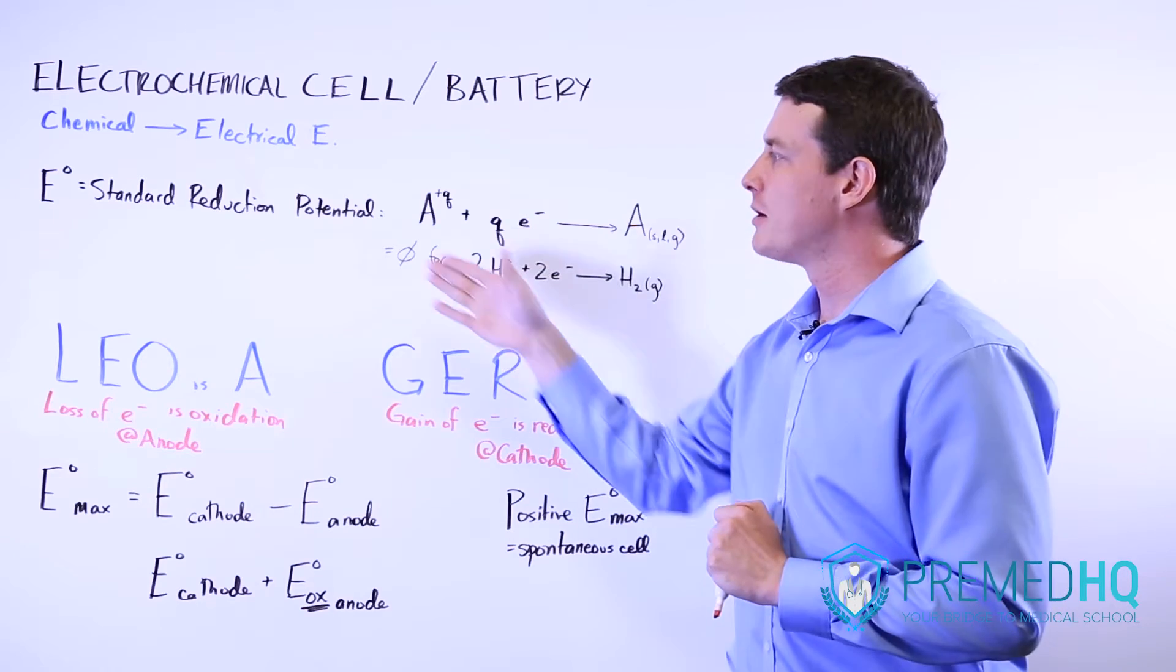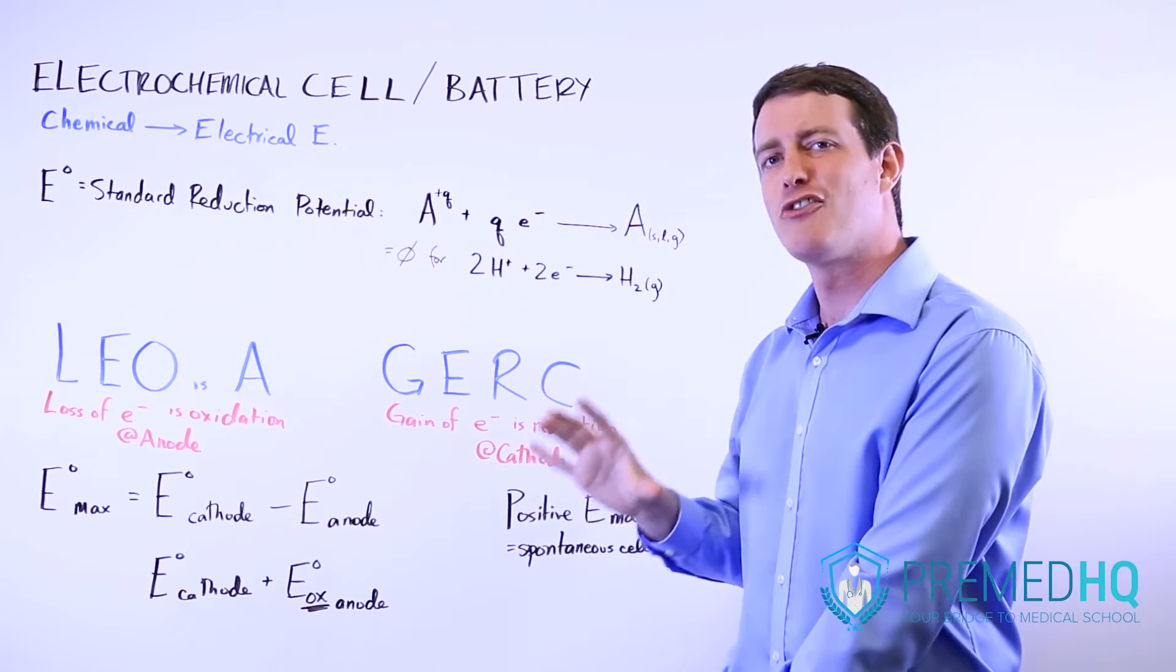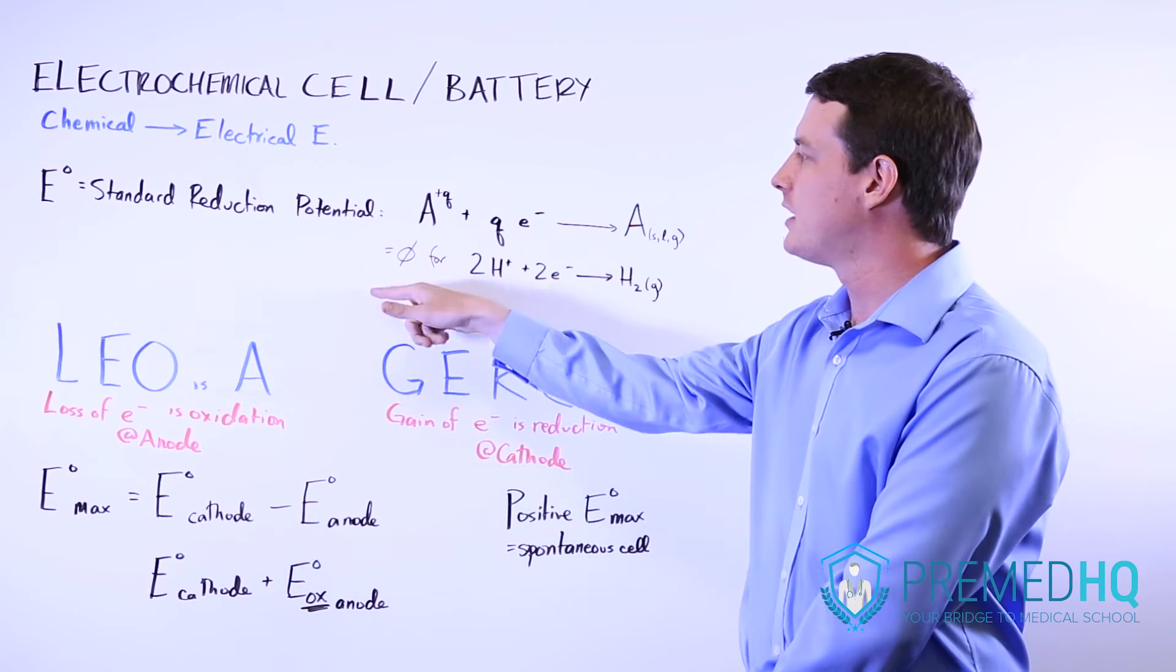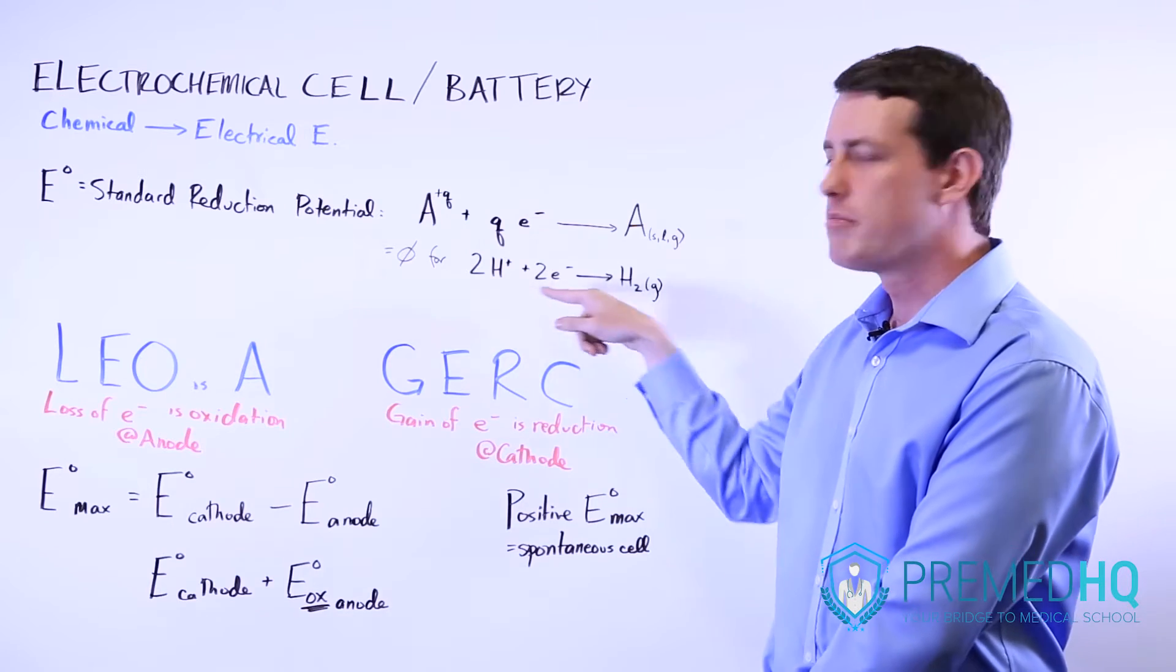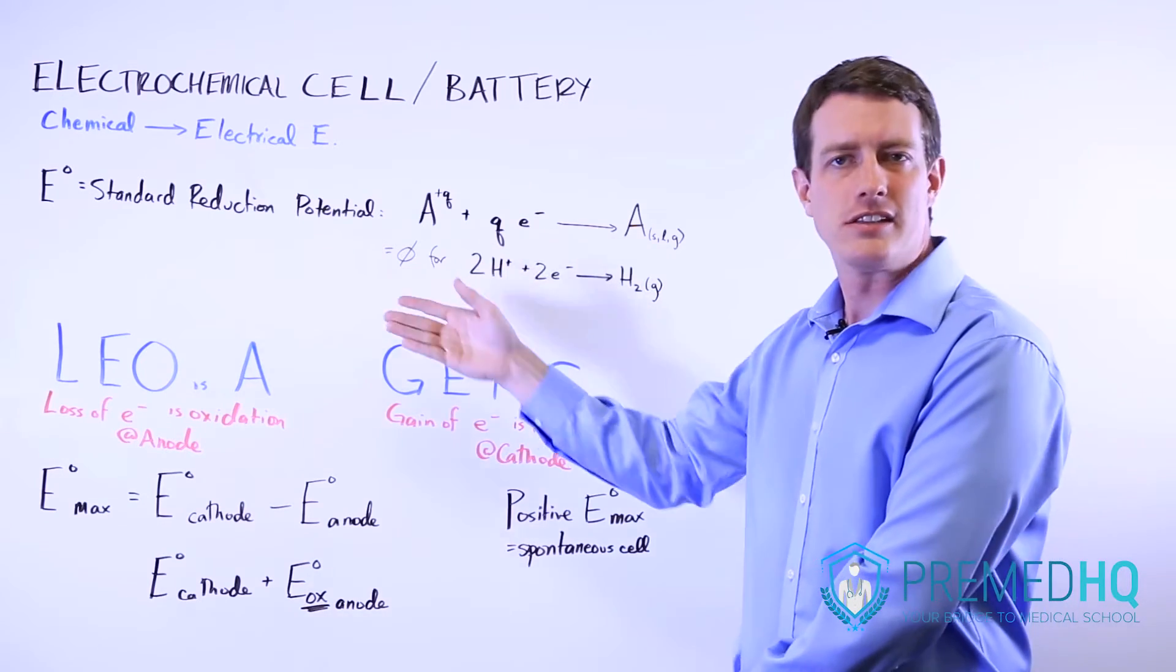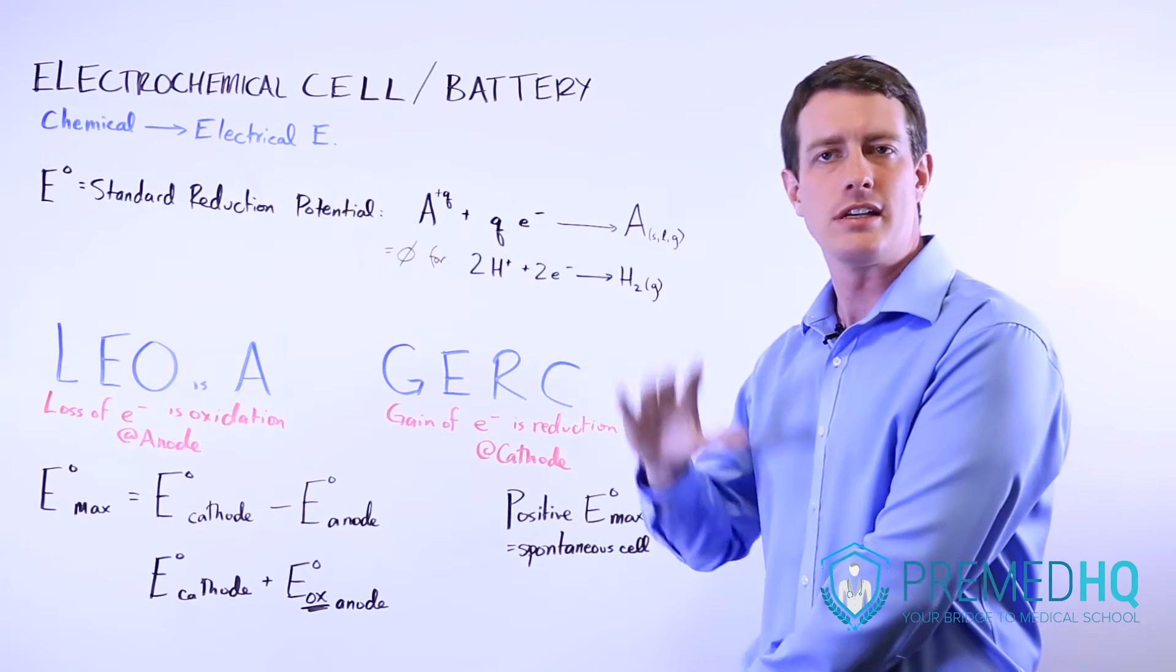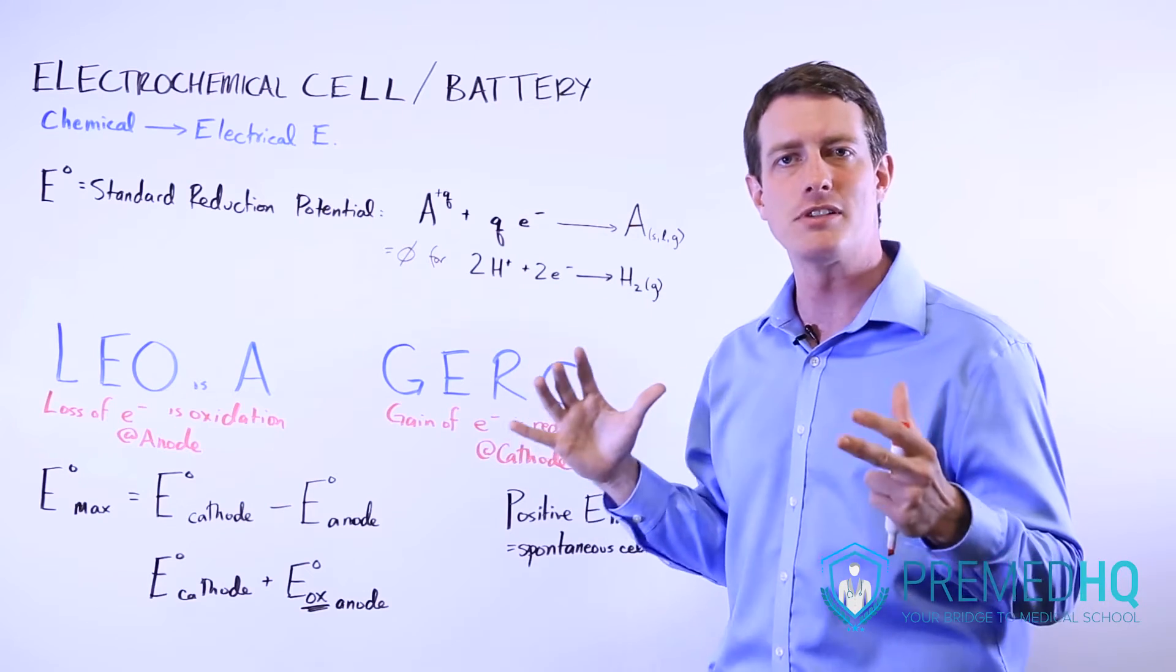One other thing to note about standard reduction potential is that it's only for the reduction, not for the oxidation, and that it is set so that the standard reduction potential of hydrogen, essentially two protons gaining two electrons, that one is set at zero. So your standard reduction potential for hydrogen is zero, and that is how they establish the scale for measuring these types of energies.